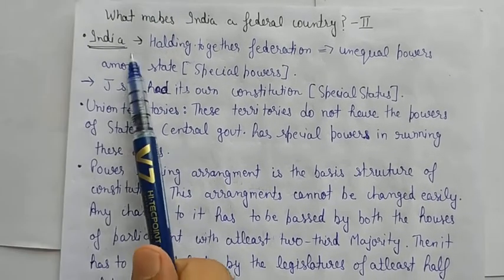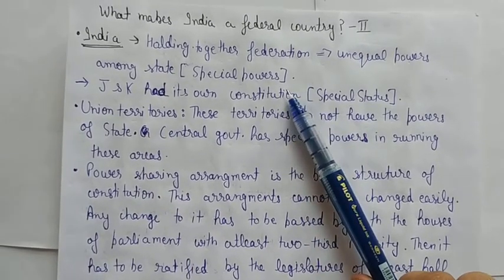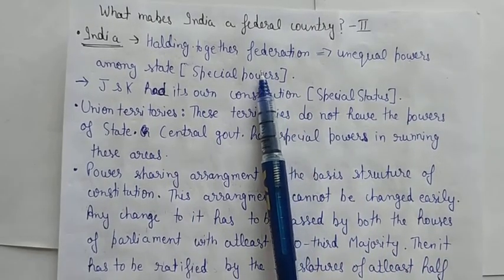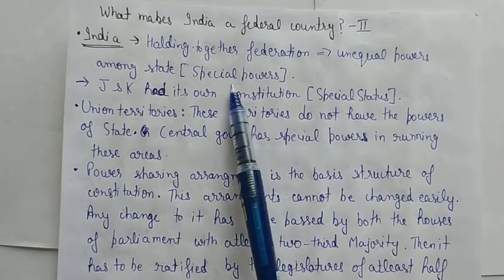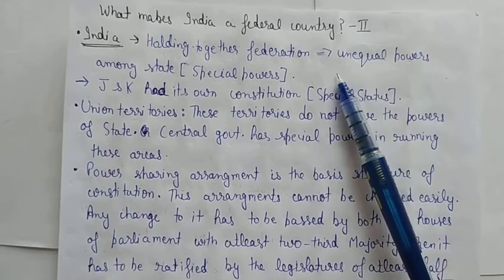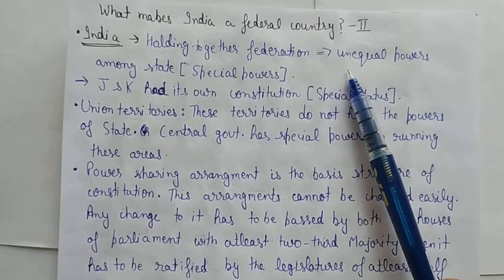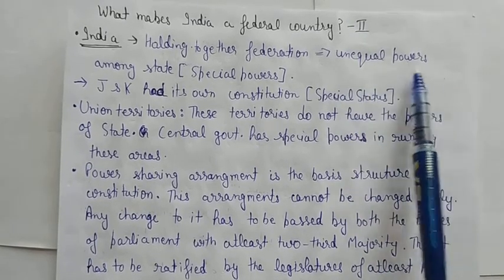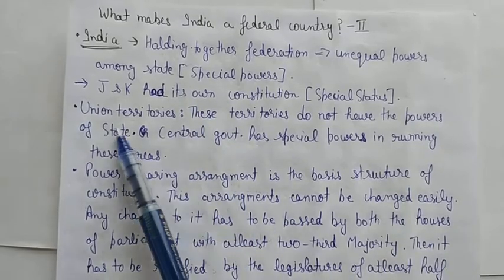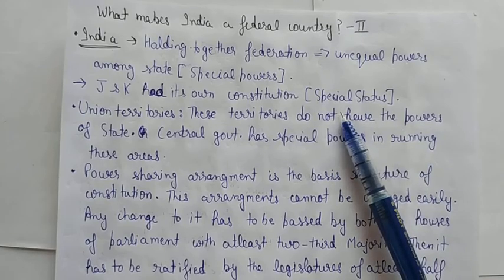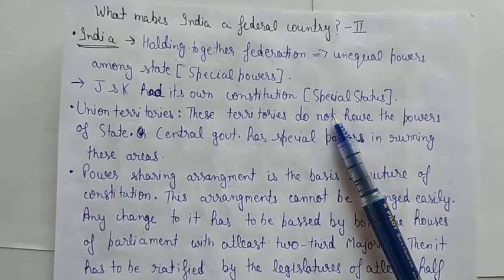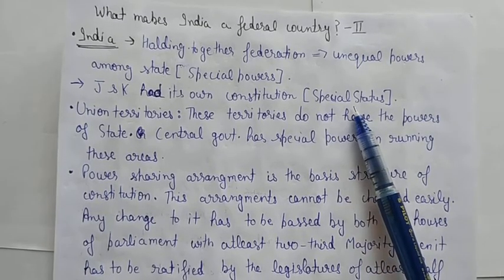Ab — India is a 'Holding Together Federation.' Alag-alag states ko ek saath jod ke rakha hua hai. Ismein unequal powers among states ho sakti hain. Jaise ek ghar mein ek bachcha zyada zidd kare toh usse thoda zyada de do, dusre ko thoda kam — usi tarah kuch states ko special powers di gayi. Jaise Jammu & Kashmir ko apna alag Constitution, alag flag, aur alag rules and regulations the — use special status diya gaya tha.